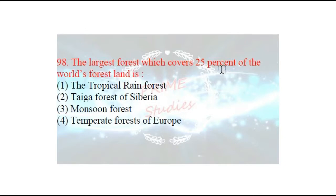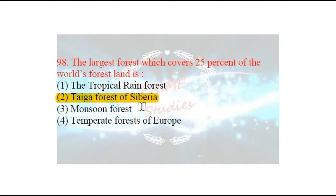Next question: the largest forest which covers 25% of the world's forest land is which? The options are: tropical rainforest, Taiga forest of Siberia, monsoon forest, or temperate forest of Europe. The right answer is Taiga forest of Siberia. The Taiga is the world's largest terrestrial biome, covering 29% of world's forest area. It is also called boreal forest or snow forest. The trees found here are coniferous trees, and it is spread across Russia and Canada.